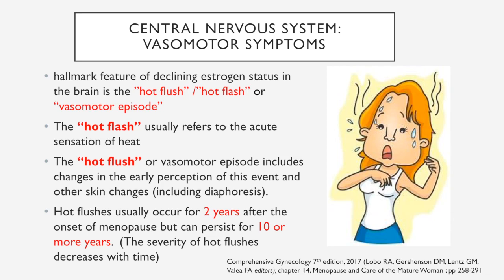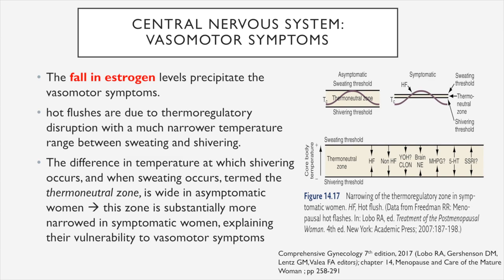Hot flashes usually occur for 2 years after the onset of menopause, but in some patients, they can persist for up to 10 or more years. However, the severity of hot flashes decreases with time. The fall in estrogen levels precipitates vasomotor symptoms. Hot flashes are due to thermoregulatory disruption with a much narrower temperature range between sweating and shivering. This thermoneutral zone is wide among asymptomatic or pre-menopausal women, but is substantially more narrowed in symptomatic menopausal women, explaining their vulnerability to vasomotor symptoms.